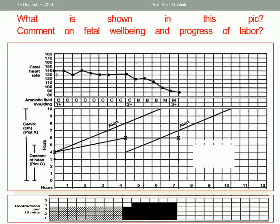What is shown in this picture? The answer is: this is a partogram for a case in active labor. What about fetal heart rate? At the start of the active stage of labor, the first stage of labor, fetal heart sound was around 140 to 130, ranging within normal, as you see in this curve. But after 6 hours, a drop happened to 100 and below 100 beats per minute, or 90 beats per minute. So this is bradycardia, meaning fetal distress.